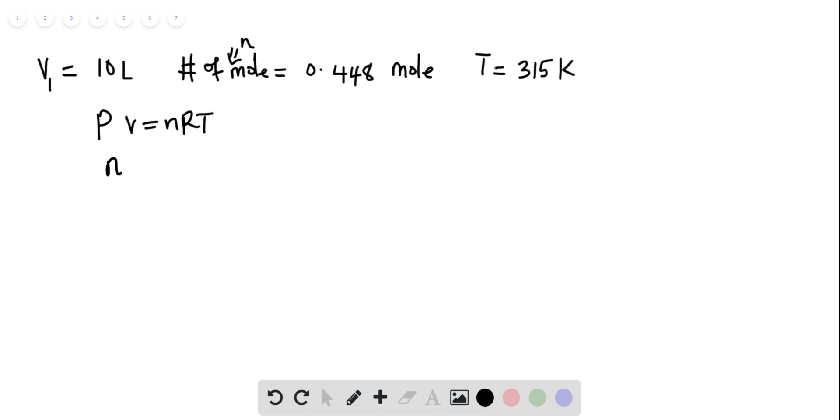We can make n the subject of the formula, that will give us n equals PV over RT. But we are looking for pressure, so pressure will be nRT divided by volume.